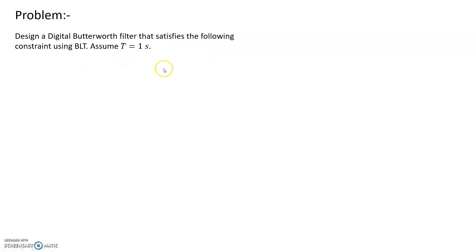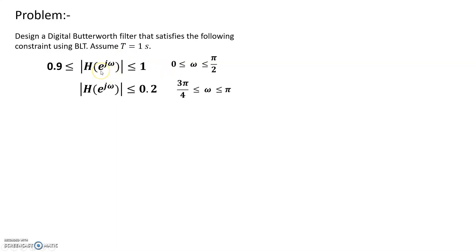Let's check the design specifications. The problem statement is: design a digital Butterworth filter satisfying the following constraints using BLT. Assume T (sampling time) equals 1 second. The constraint is that |H(e^jω)| varies between 0.9 and 1 — that is, the passband amplitude varies between 0.9 and 1, for frequencies 0 to π/2. For the stopband, the cutoff frequency is 3π/4, and the stopband gain tolerance is 0.2.